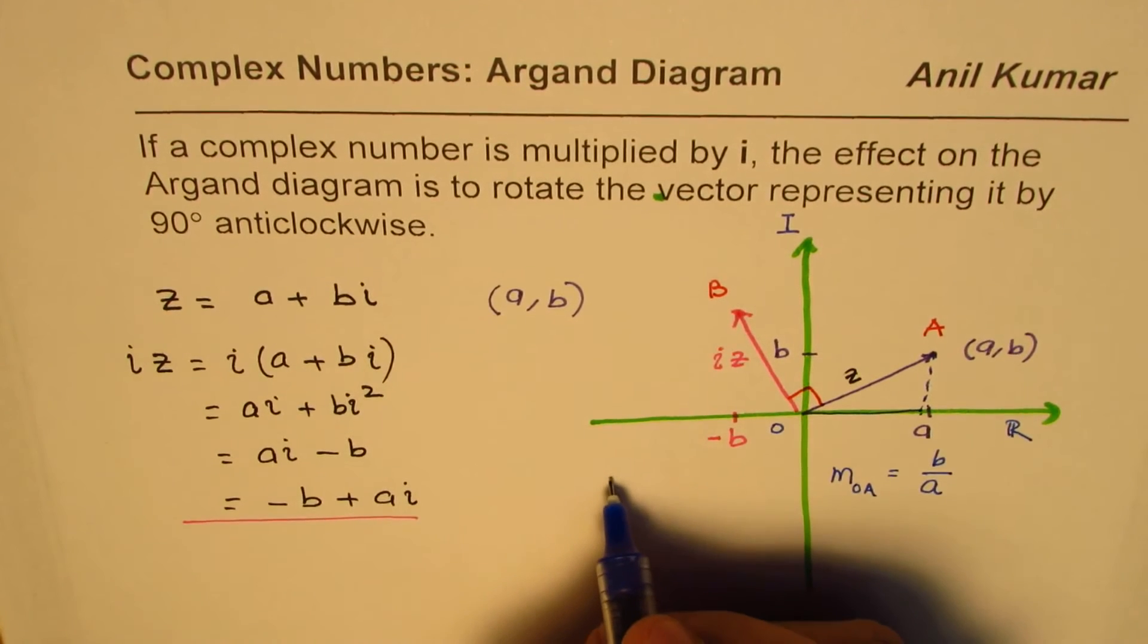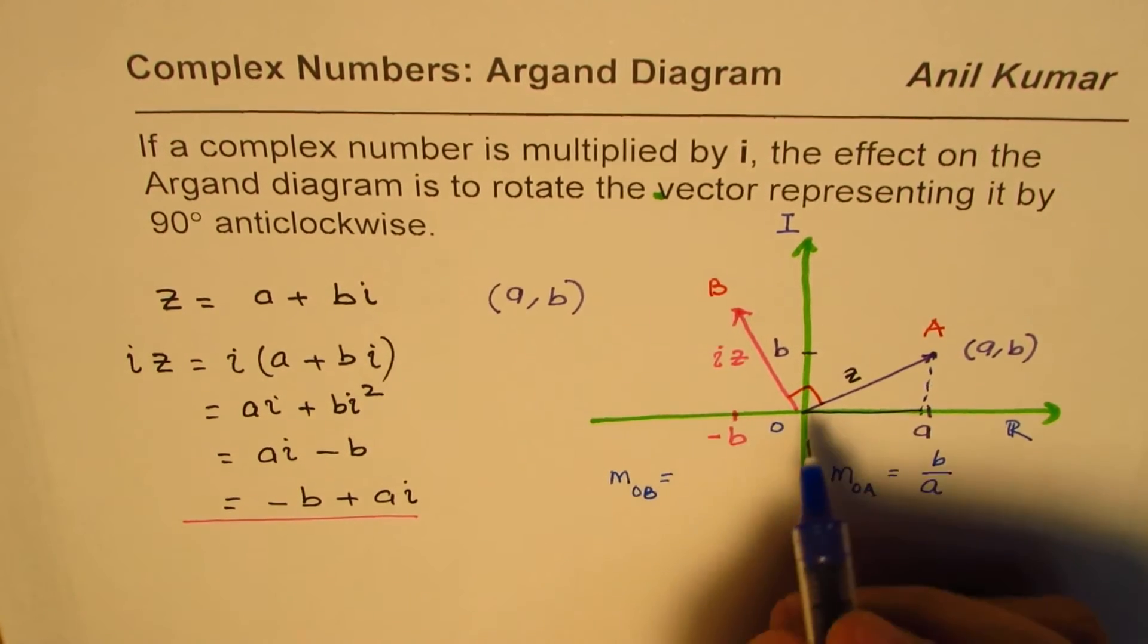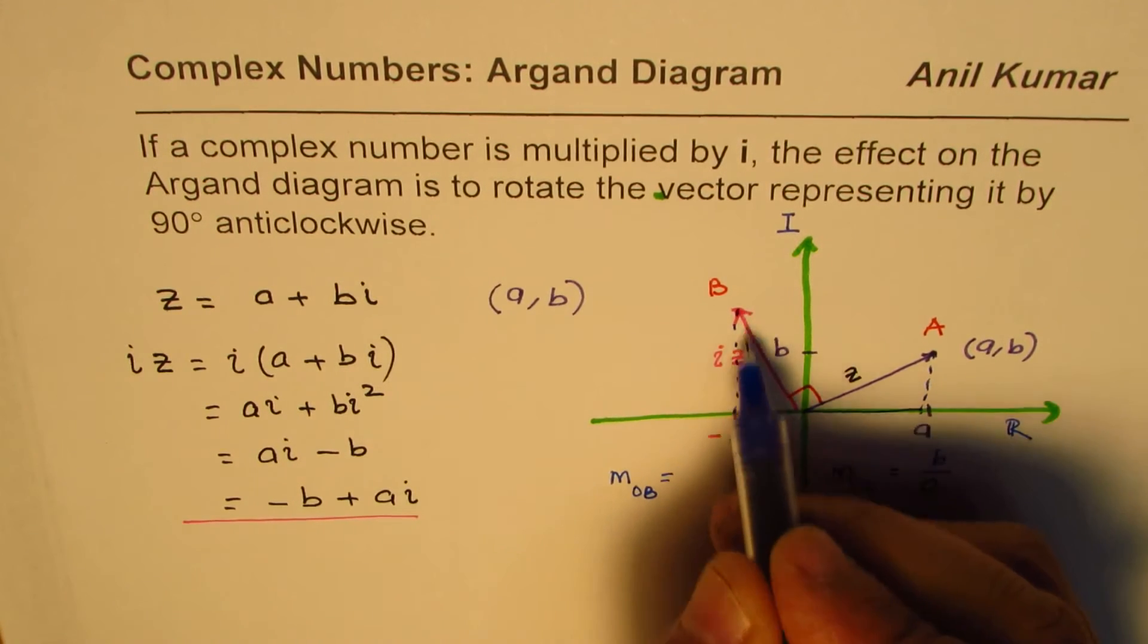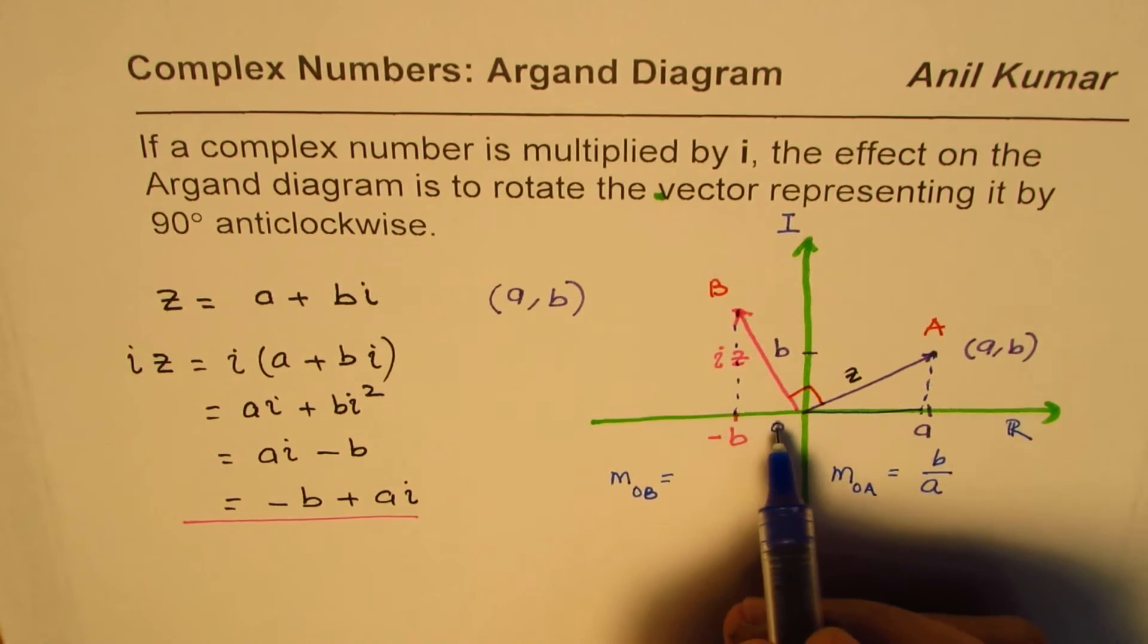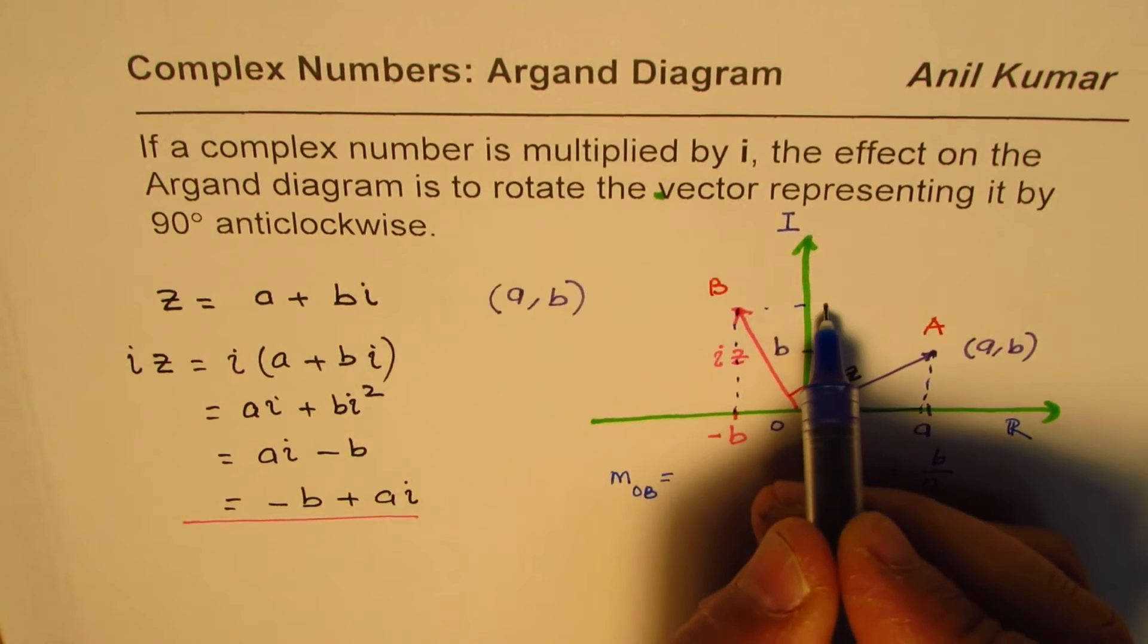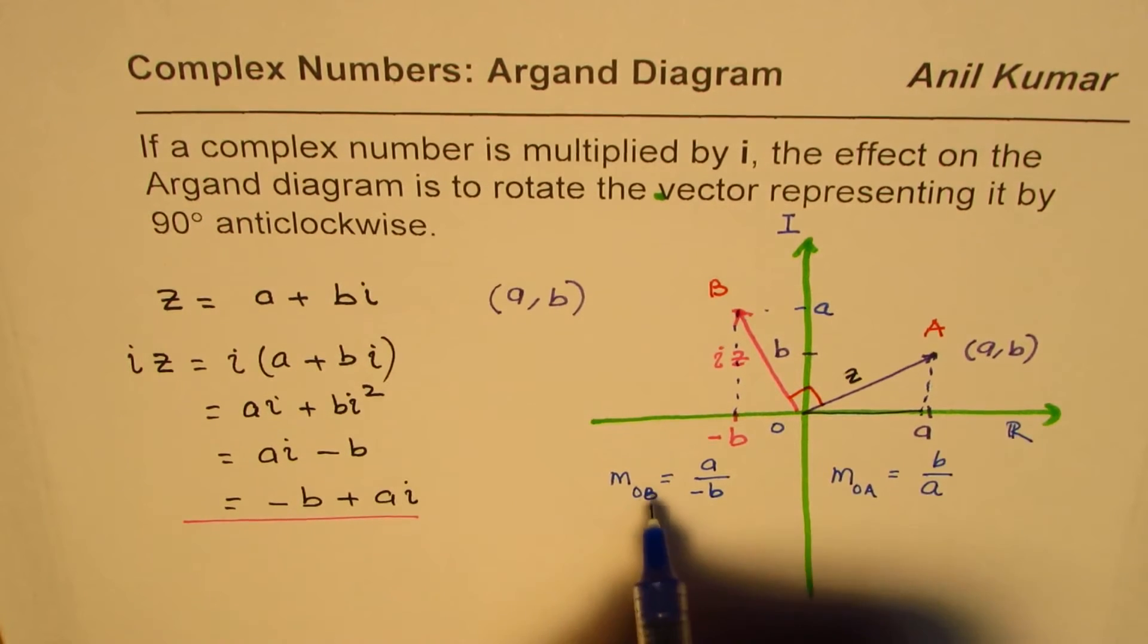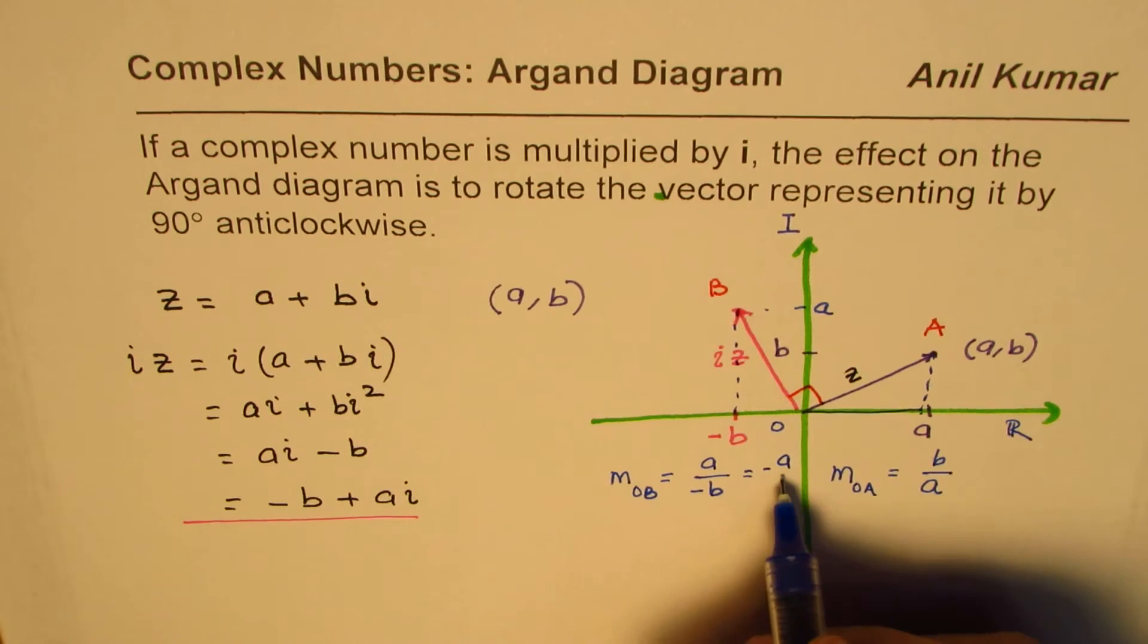On the other hand, what is the slope of OB? Now, in this case, if you find the slope of OB, then, you know, it is the height, in this case, the height is equal to a, right? So, this is equal to a, and the base length is minus b. So, the slope of this OB is minus a over b.